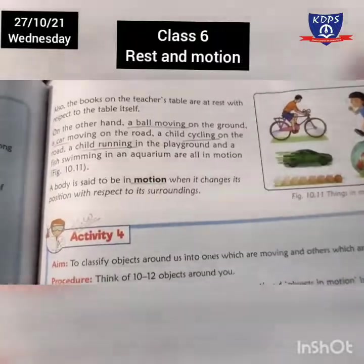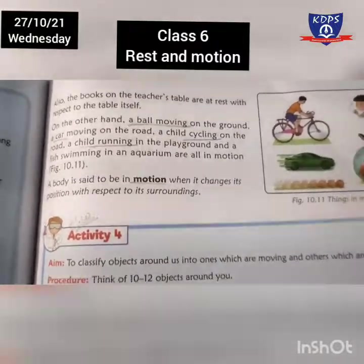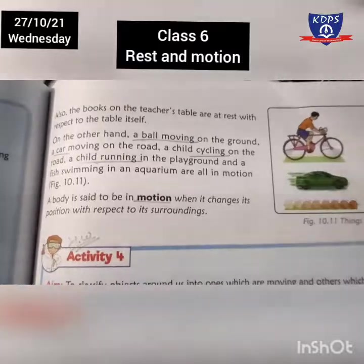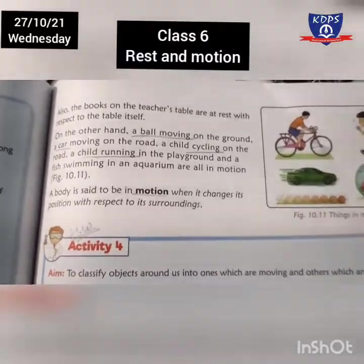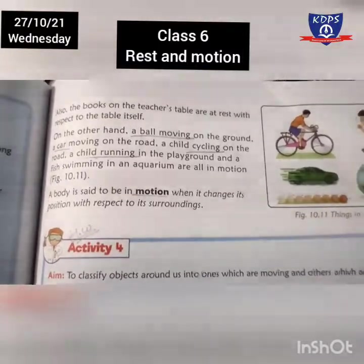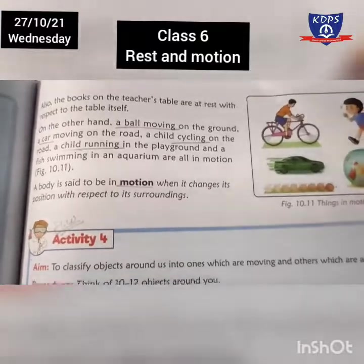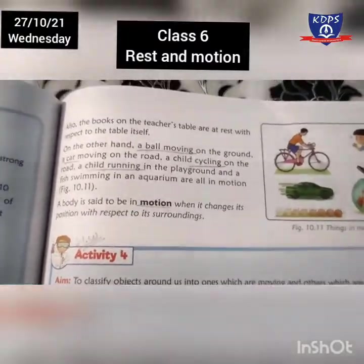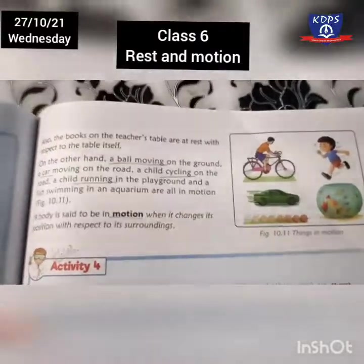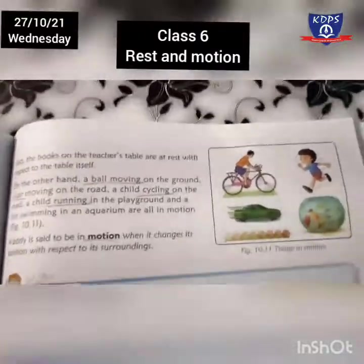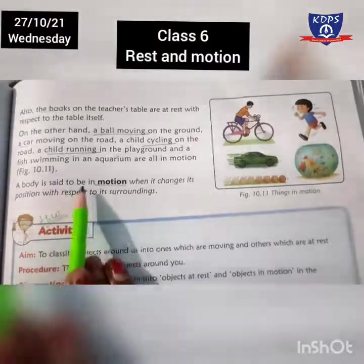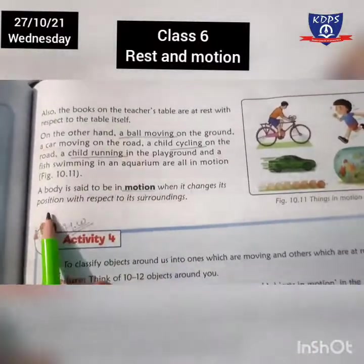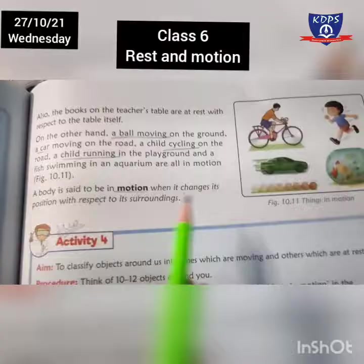So there are two things: one is rest and one is motion. Rest is when a body does not change its position — we say it is at rest. But when a body changes its position with time, we say it is showing motion. A body is said to be in motion when it changes its position with respect to its surroundings.